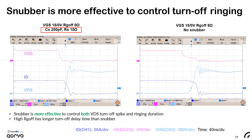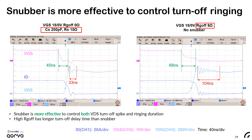We recommend a simple RC snubber to provide the best trade-off between EMI and switching loss. The left waveform uses snubber with 0 Ω RG off, and the right waveform uses high RG off with no snubber. Both limit the turn-off VDS peak spike. However, the snubber uses only 33 nanoseconds to damp the ringing, while high RG off still has over 100 nanoseconds of ringing duration. Also, snubber has less delay time than using high RG off. Therefore, snubber is more effective to control both VDS spike and ringing duration at turn-off.